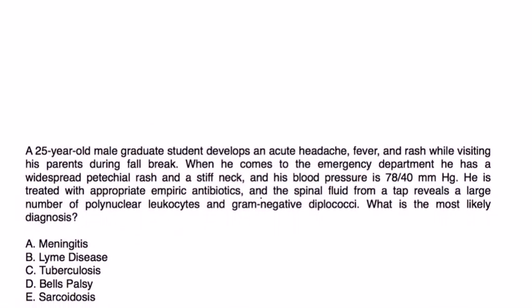Clinical vignettes. A 25-year-old male graduate student develops acute headache, fever, and rash while visiting his parents during fall break. When he comes to the emergency department, he has a widespread petechial rash and stiff neck, blood pressure 78. He's treated with appropriate empiric antibiotics, and spinal fluid from a tap reveals a large number of polymorphonuclear leukocytes and gram-negative diplococci. What is the most likely diagnosis? This is a nice classic clinical vignette describing a patient with meningitis.